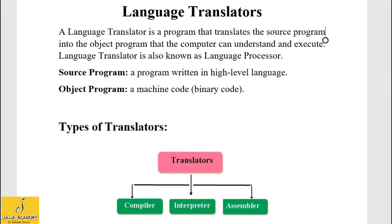Computers only understand binary language, but humans cannot understand binary language, so they use a variety of low-level and high-level languages to write their programs. In order to make low-level or high-level programs understandable by the computer, we use translators, which are called language translators or language processors.